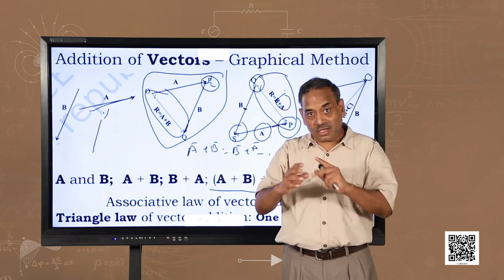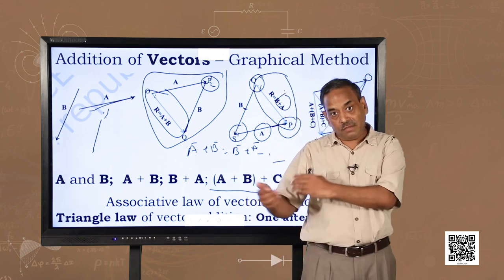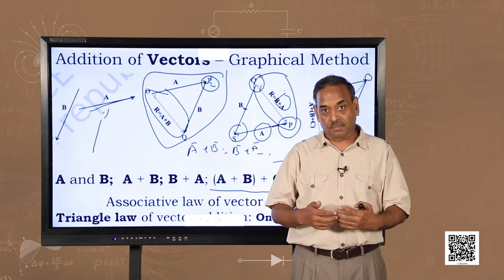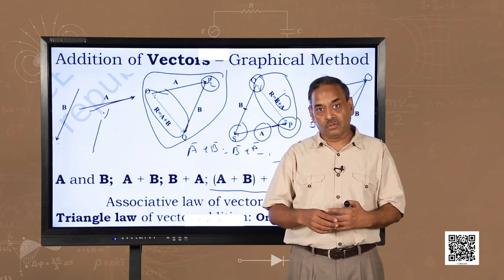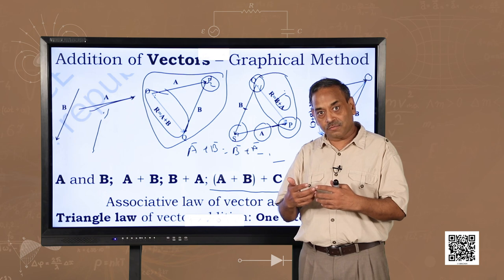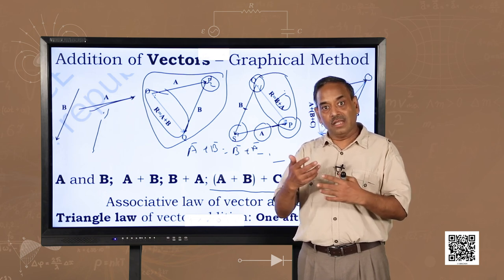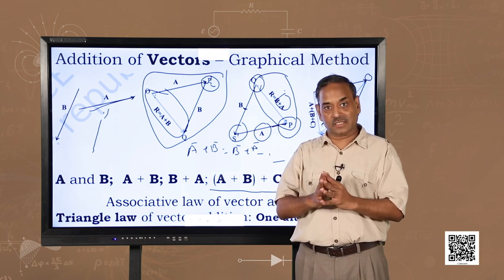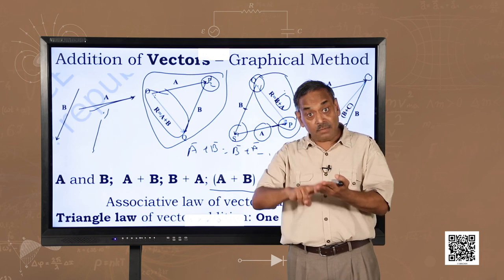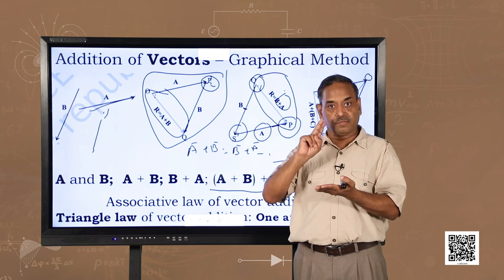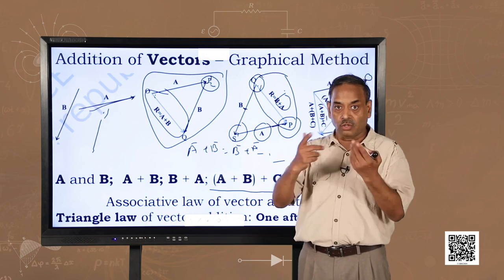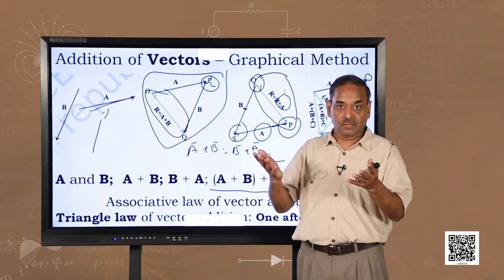Vector quantities are different from scalar quantities. Many teachers define vector quantities only as quantities having magnitude and direction — but this is an incomplete definition. The complete definition is that vector quantities have magnitude and direction AND follow the vector law of addition. For example, electric current has direction and magnitude but does not follow the vector law of addition, so it is a scalar quantity.